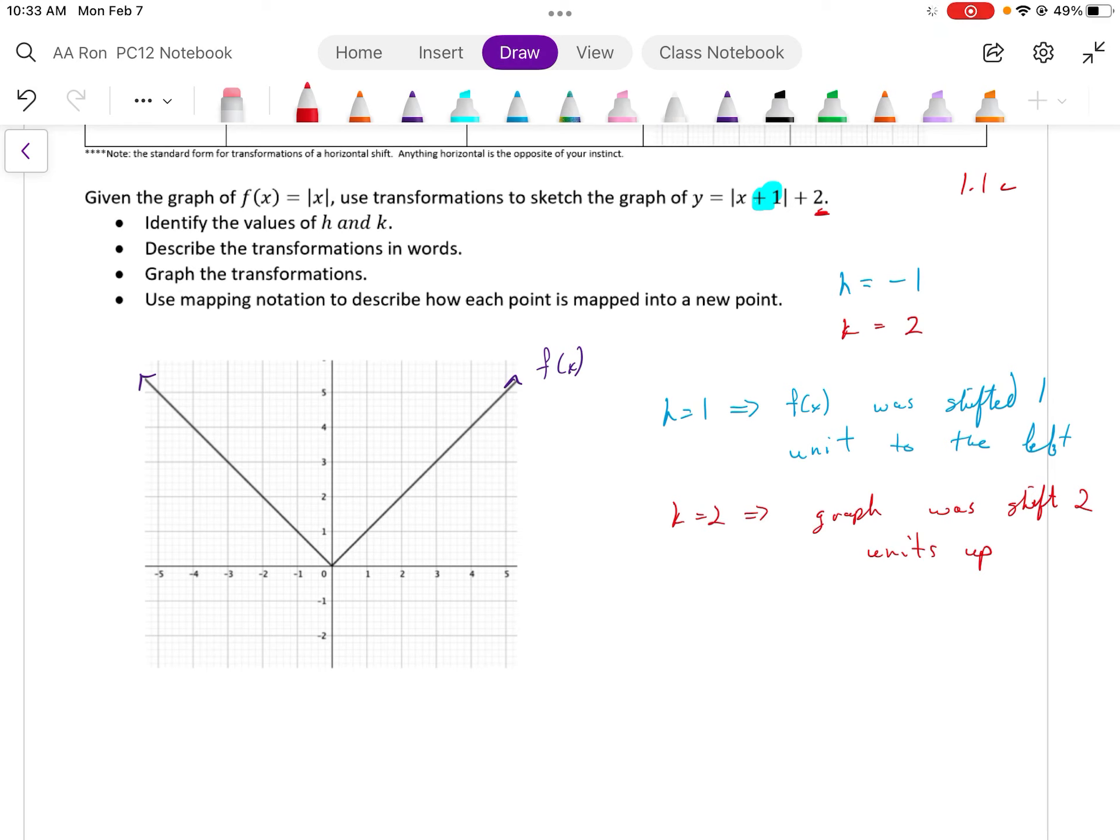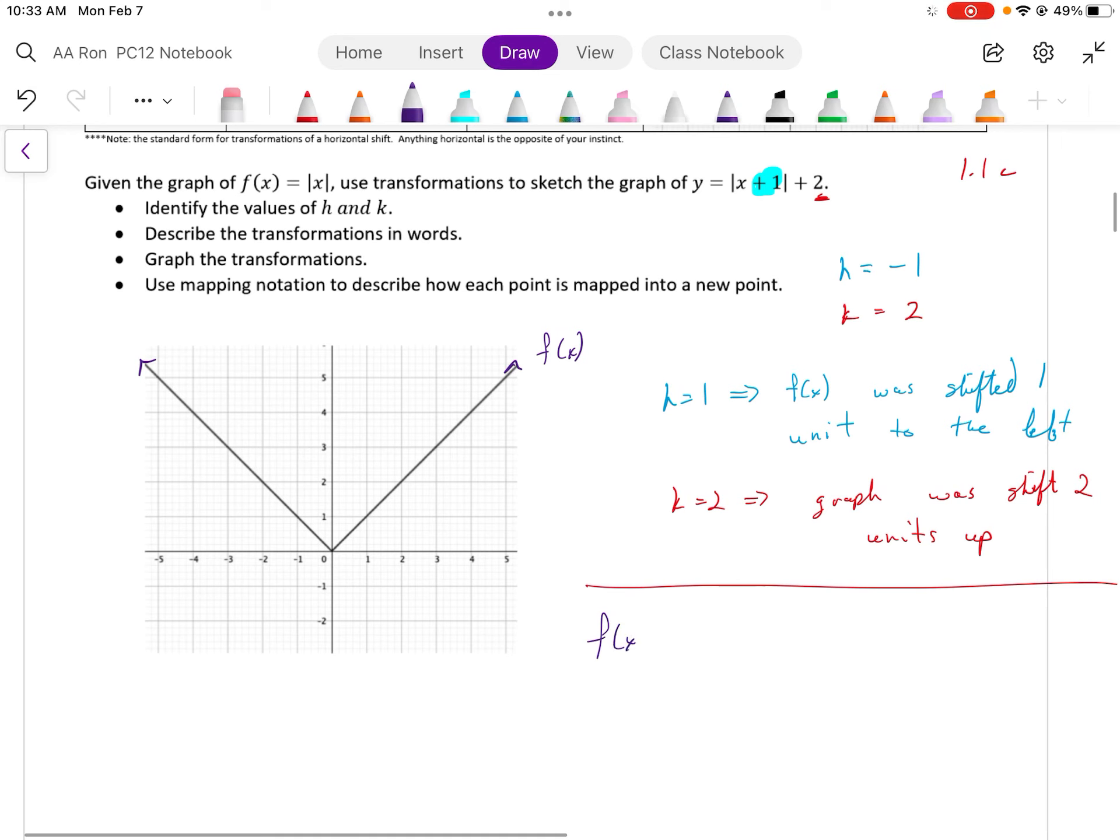So now we're going to need to graph our transformations. But while I graph my transformations, I'm actually going to look at the next bullet. The next bullet says use mapping notation to describe how each point is mapped into the new function. So I have f(x), y equals f(x), and I have point x comma y. That's how I'm starting off.